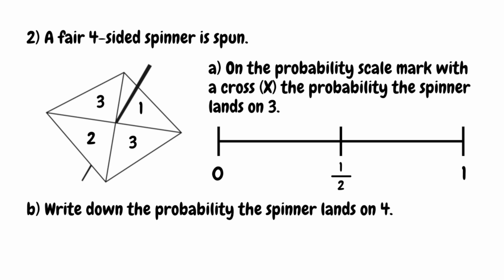For the next question, a fair four-sided spinner is spun. For part A, we want to mark with a cross the probability that the spinner lands on three. We look for the number of threes — there's one here and two here, so two successful outcomes out of four total. The probability of landing on three is two quarters, which simplifies to one half. We mark that on the probability scale.